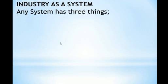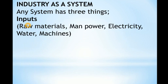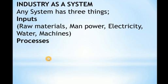Now let's look at industry as a system. A system has three components: inputs, processes, and outputs. For inputs in an industry, the most important is raw materials. Machines are also key inputs — they use electricity to produce goods, and many are run by computers operated by people, which is manpower or labor. Machines also need water to cool down or as a raw material.